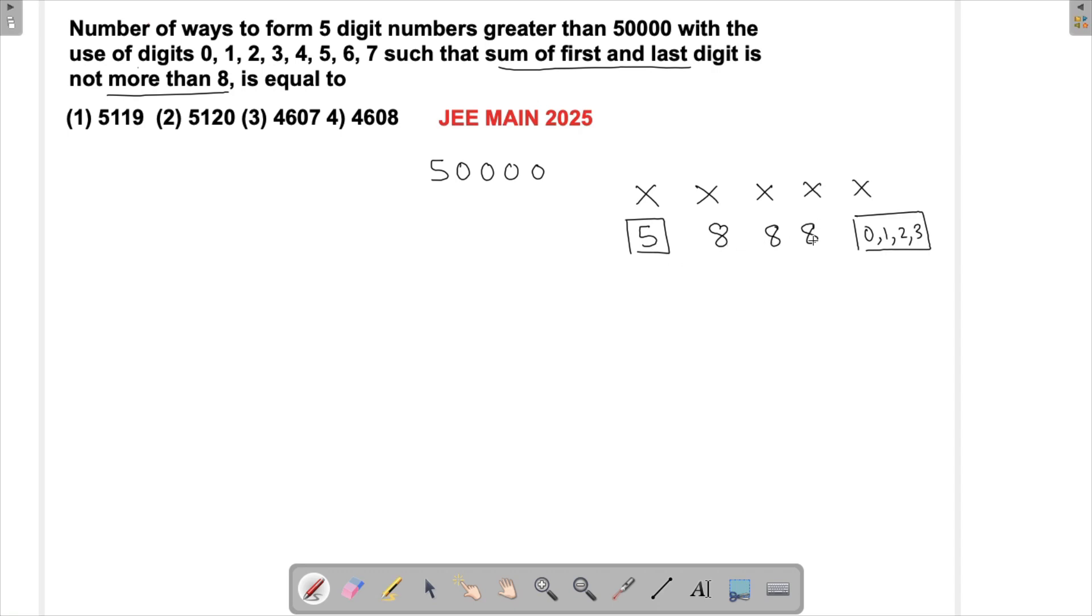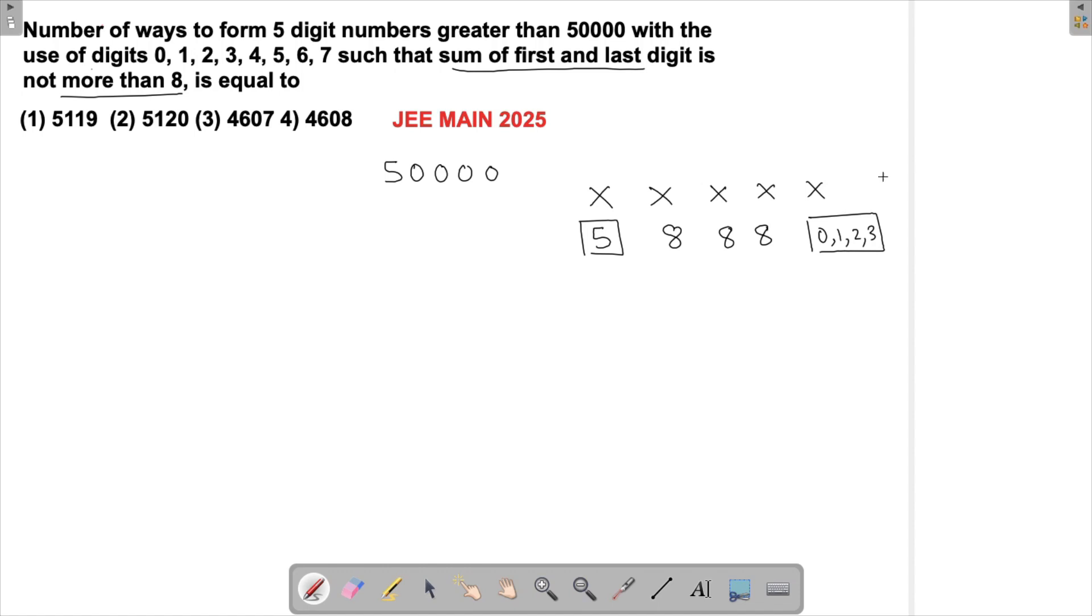So this is 1 × 8 × 8 × 8 × 4 ways. All in all, total I've got 8³ × 4.